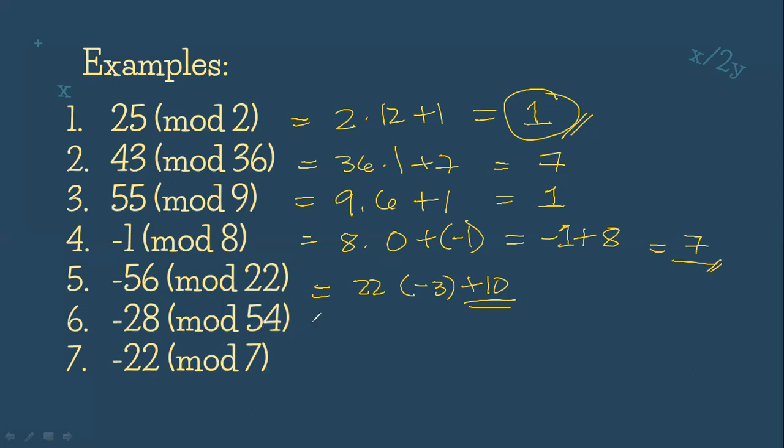Since 10 is the remainder, this is the value of negative 56 mod 22. So we have 10.